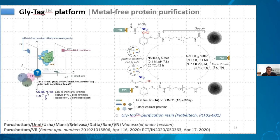Can GlyTag distinguish glycine from beta-alanine or gamma-aminobutyric acid? So far we have not tested anything beyond natural amino acids. We believe that subtle structural changes could have an effect, since the success of this chemistry depends on appropriate orbital overlaps. I'll reserve comment on how anything beyond natural amino acids would affect GlyTag chemistry until we try that out.